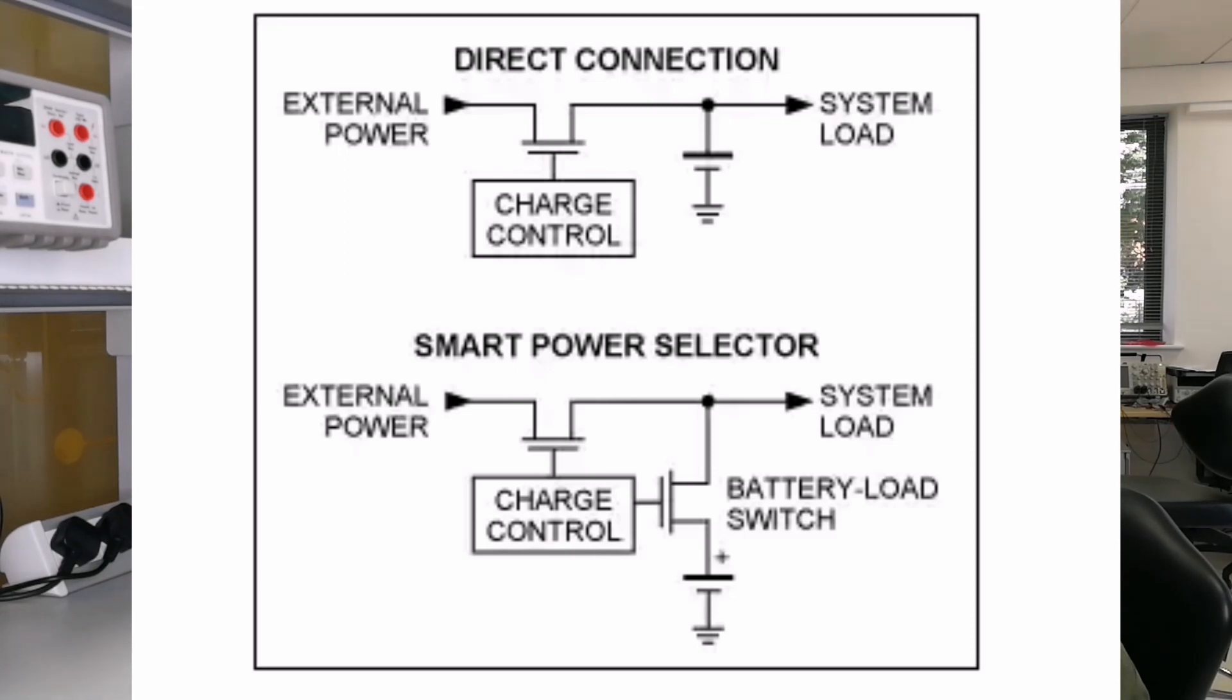In USB and adapter powered charging applications, you must decide whether to connect the charge circuitry directly to the battery and system load, or whether to add a switch to disconnect the battery from the system load when external power is applied. The direct connection architecture shown here is the simplest, but issues arise when the battery is deeply discharged. In that case, the system may not be able to boot until the battery recharges to a certain level.